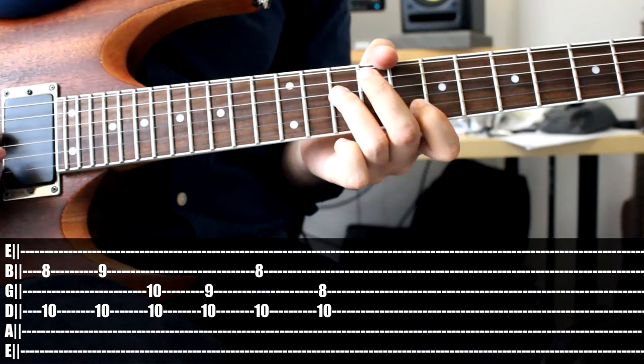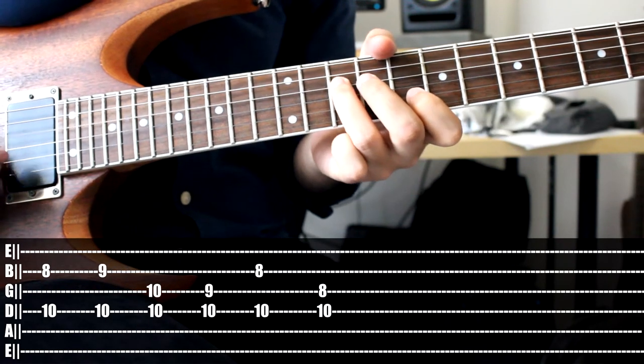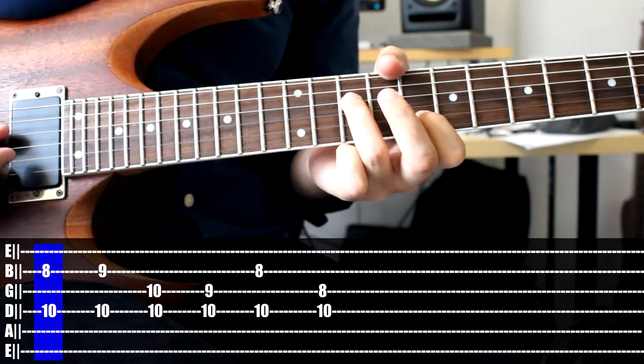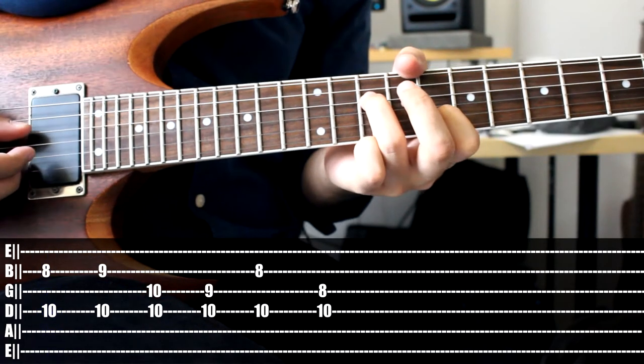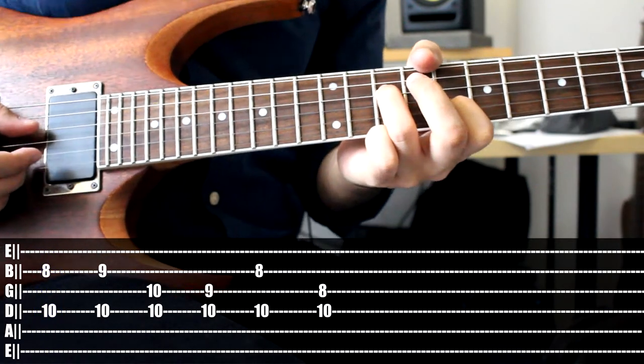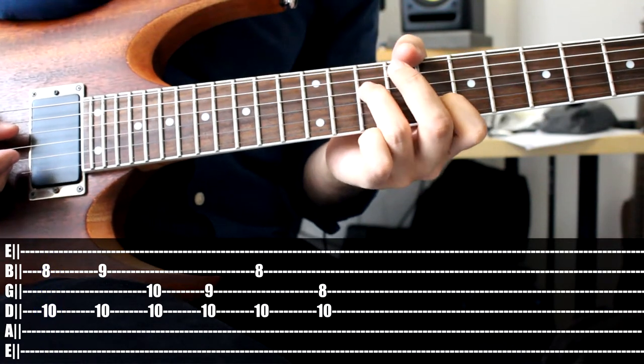So that's starting on the D string with our ring finger on the 10 and B string 8 with our index finger. And from there you're just playing it once openly and then muting all the notes and playing them continuously after each other.